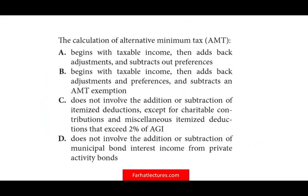Let's take a look at the first question: the calculation of AMT begins with what? They're asking us whether we know how to compute AMT — what do you start with? You start with taxable income. Looking at option A: it begins with taxable income, then adds back adjustments — that's partially true. But then it says subtract out preferences, and preferences we always add. Also, adjustments could be pluses or minuses. So option A is out.